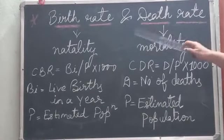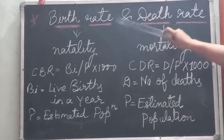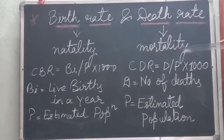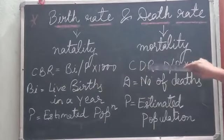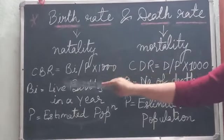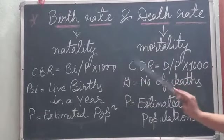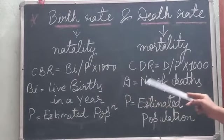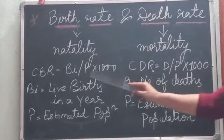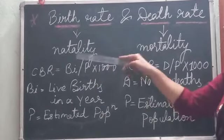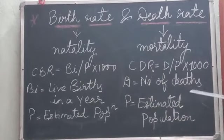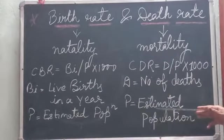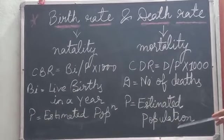To recap: birth rate is also called natality rate and death rate is also called mortality rate. CBR stands for Crude Birth Rate and CDR stands for Crude Death Rate. CBR = BI / P × 1000 and CDR = D / P × 1000, both calculated per 1000 individuals. BI indicates live births, D indicates number of deaths, and P is the estimated population at mid-year, in both formulas.